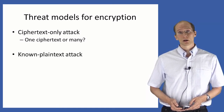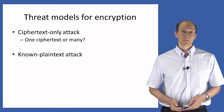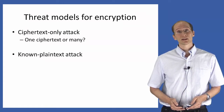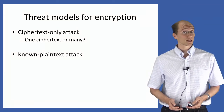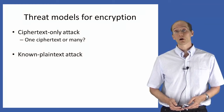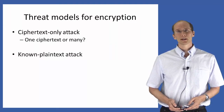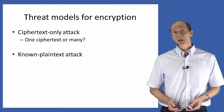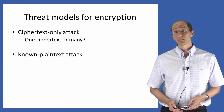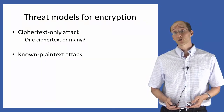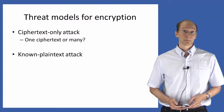A stronger threat model is the so-called known plaintext attack. Here the attacker will again observe one or more ciphertexts whose underlying plaintext is unknown, but in addition, the attacker is able to obtain a bunch of ciphertexts encrypted using the same key, along with the corresponding plaintext. This might seem unrealistic, but there are many real-world scenarios in which such an attack is possible. For a simple example, imagine that every day Alice and Bob begin by sending encrypted hello messages back and forth — if the attacker observes those ciphertexts, it knows the underlying plaintext.